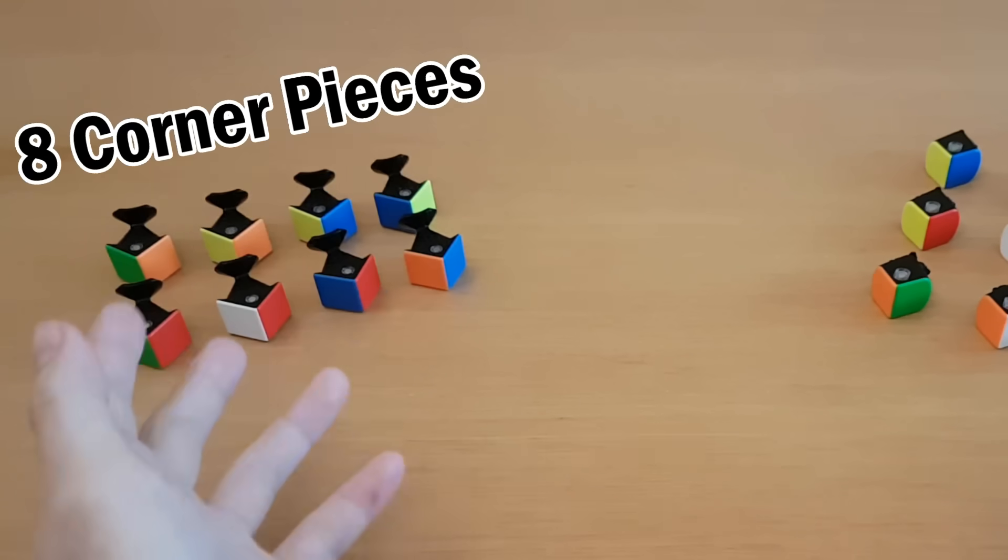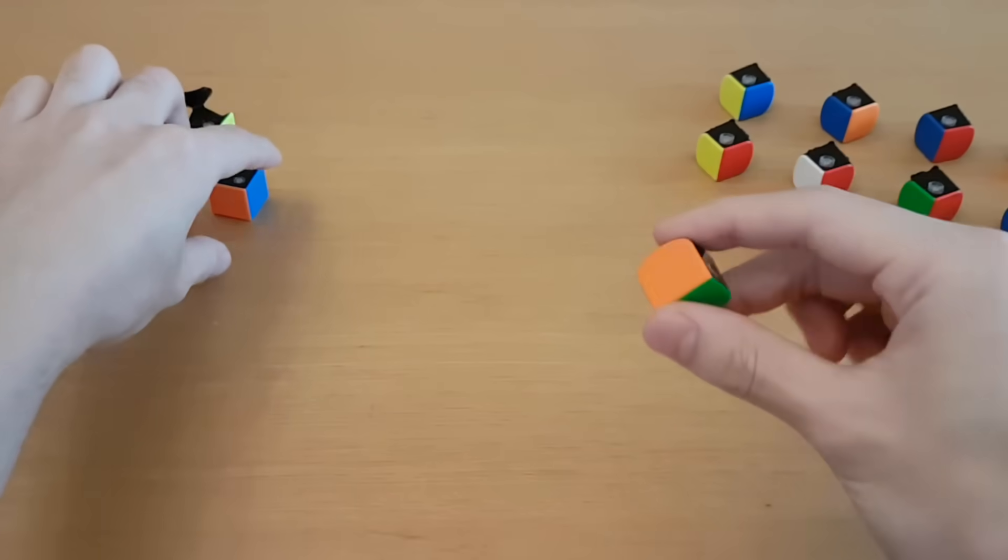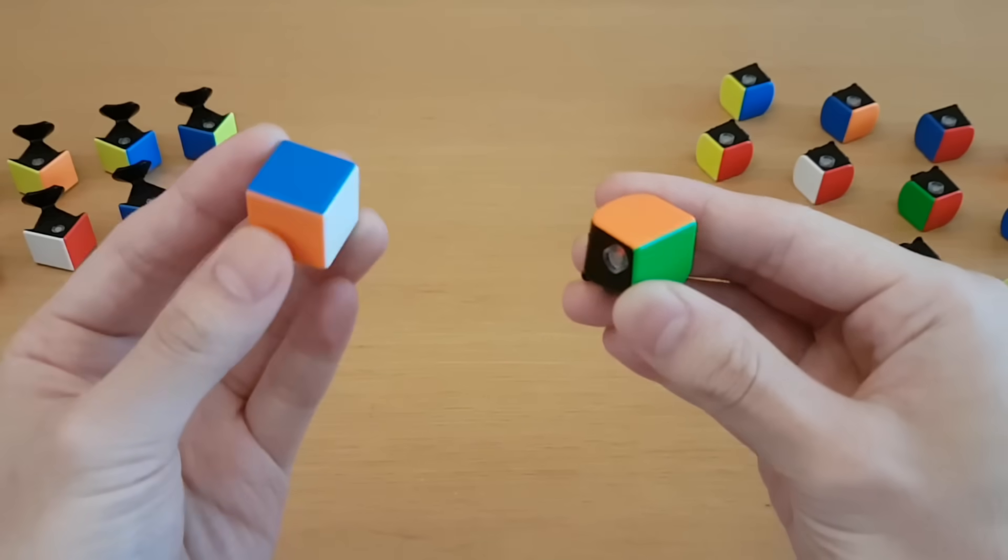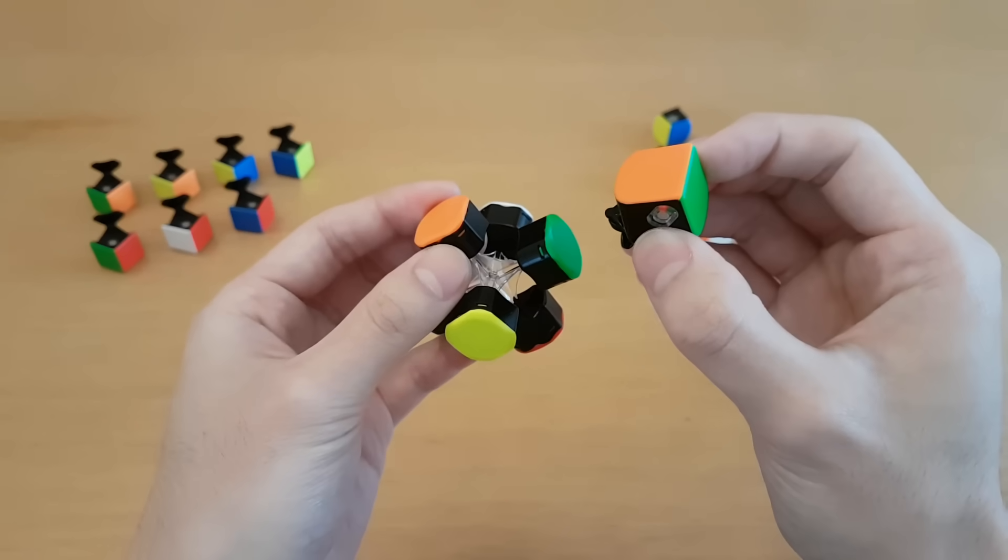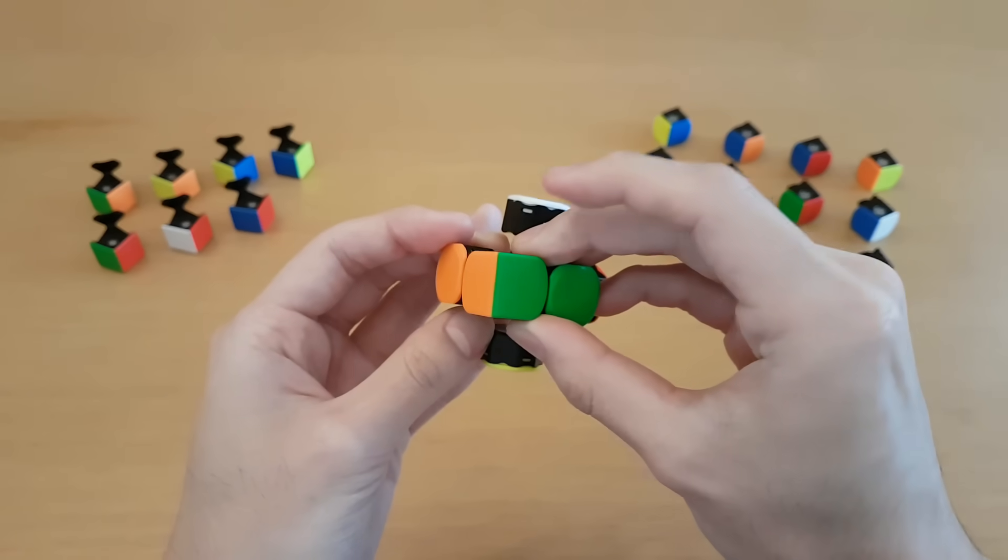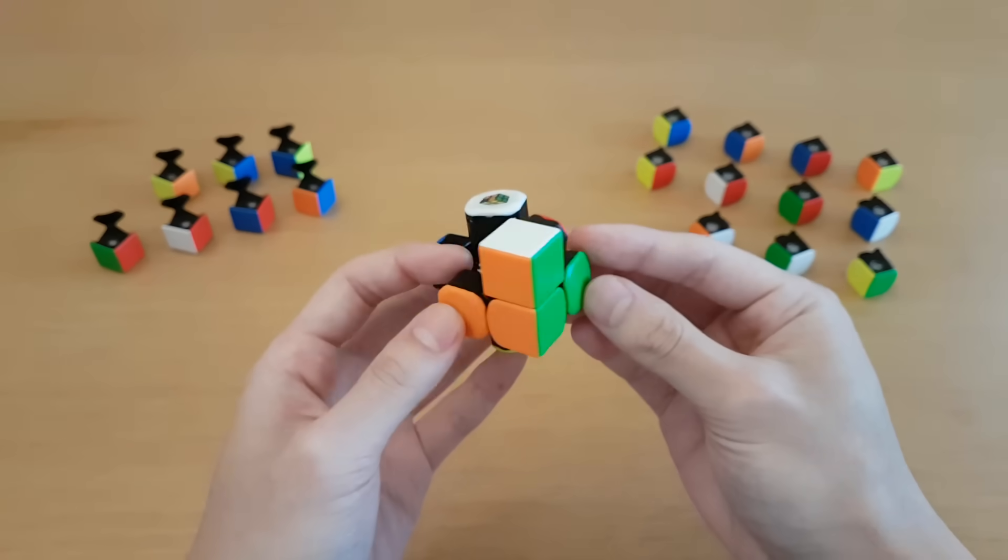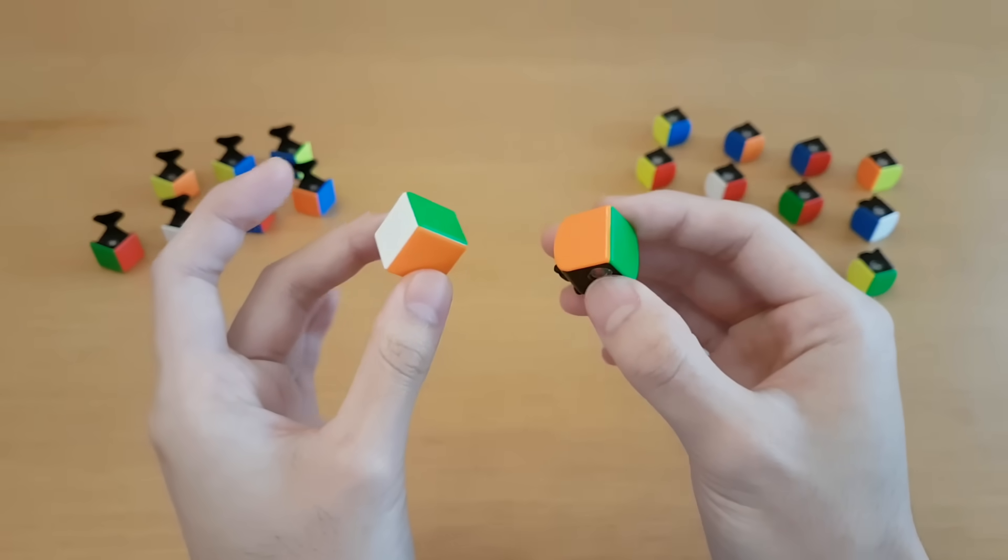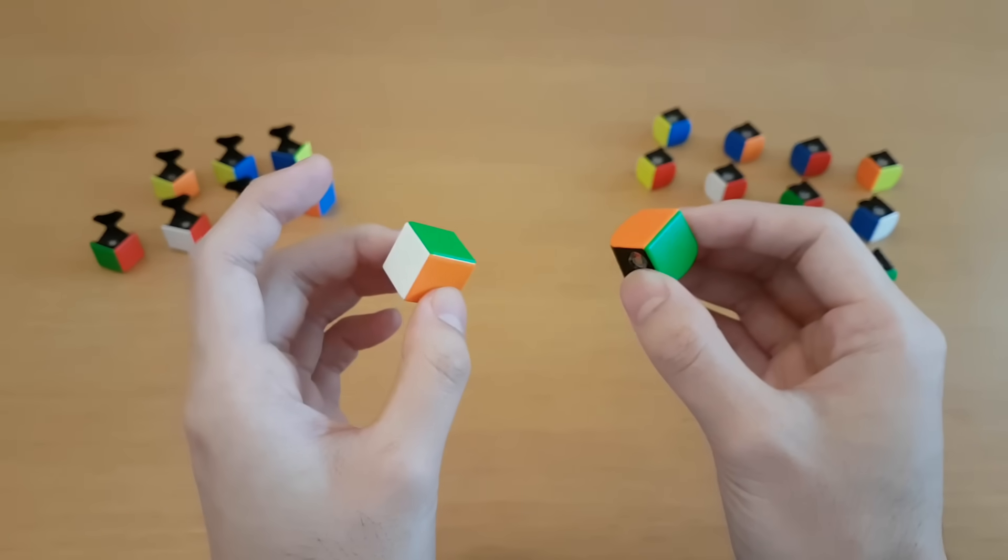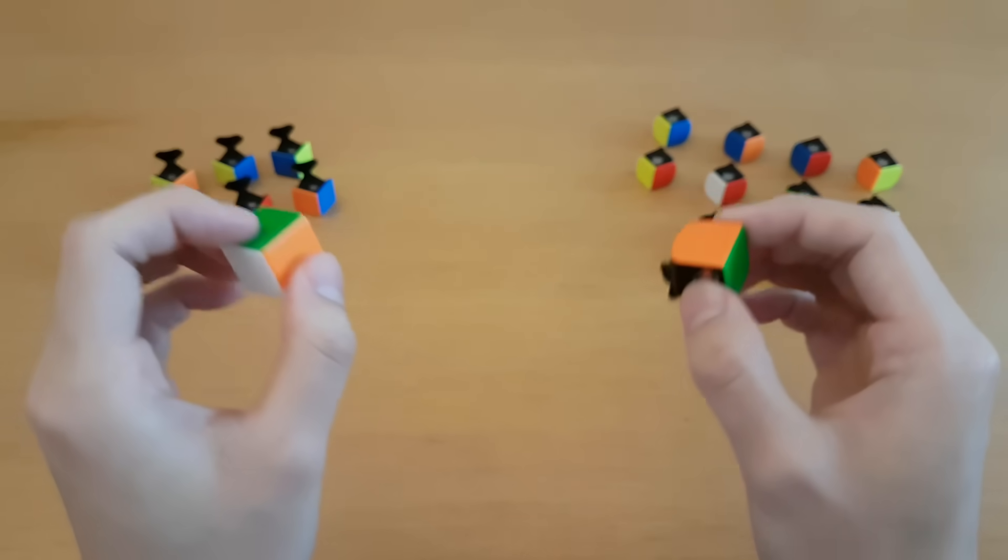There are 12 edge pieces and 8 corner pieces. Now the difference between these is an edge piece has two colors and a corner piece has three colors. Edge pieces can go between two centerpieces such as this, and a corner piece would go between three centerpieces such as this. Since corner and edge pieces belong in completely different spots, they can't interfere with each other, so for now we'll consider them as completely separate.